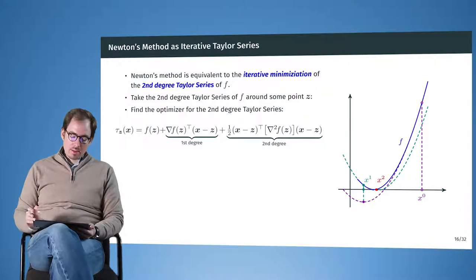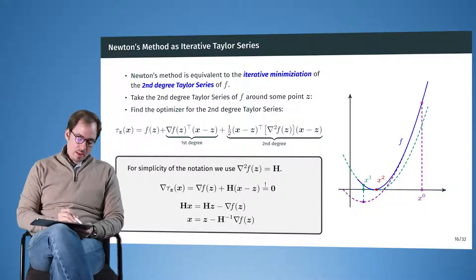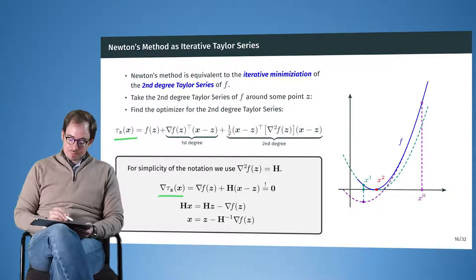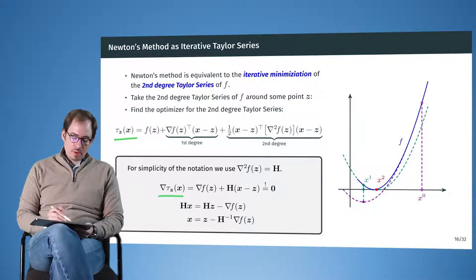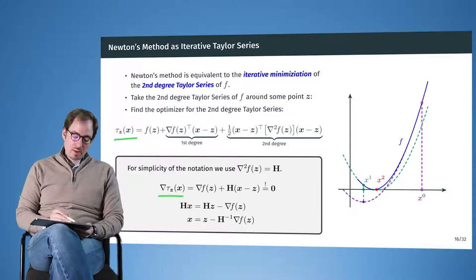And here's the derivation. So there's one step that is a little bit more complicated, to compute the gradient of this Taylor expansion. Here it's tau of x at the location z. And to get to this gradient, you have to recall that the Hessian is symmetric. And then it should be quite straightforward to get from this expression to the gradient.